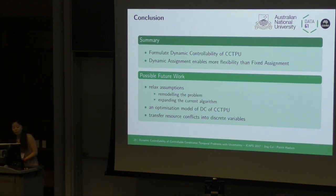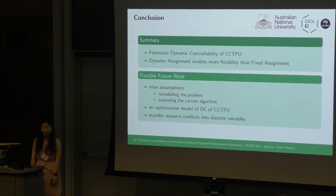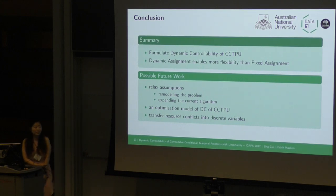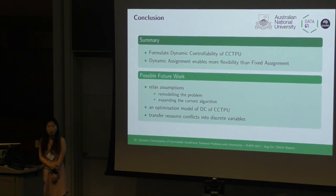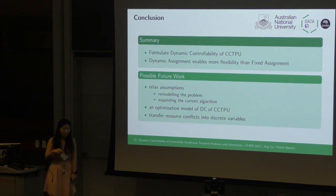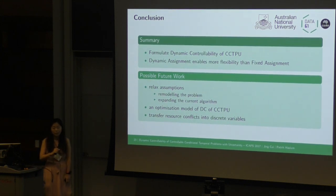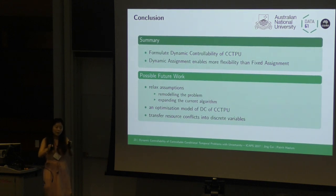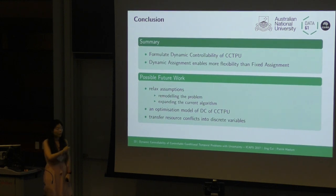During Q&A, a question was raised about extending to stochastic uncertainty, such as PSTN or PSTNU. We have done some work on STPU with distributions, but not with options. It is not very difficult — it depends on how to handle the distribution. If we cut the distribution into lower and upper bounds, then we can use this algorithm.